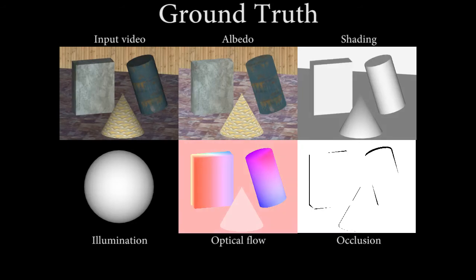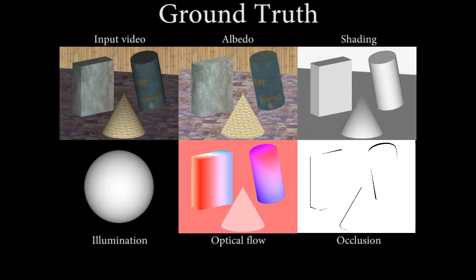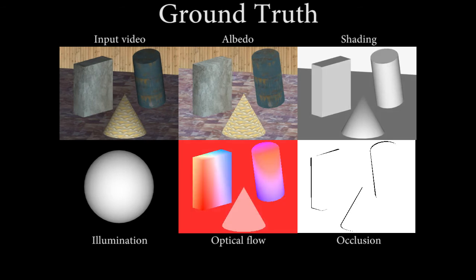In this synthetic example, all objects in the scene are moving, while the camera translates. Illumination does not change much in this case.